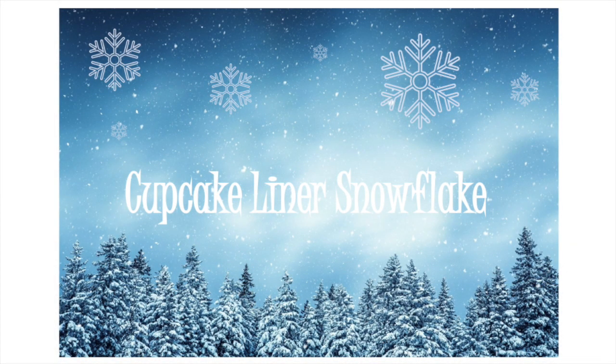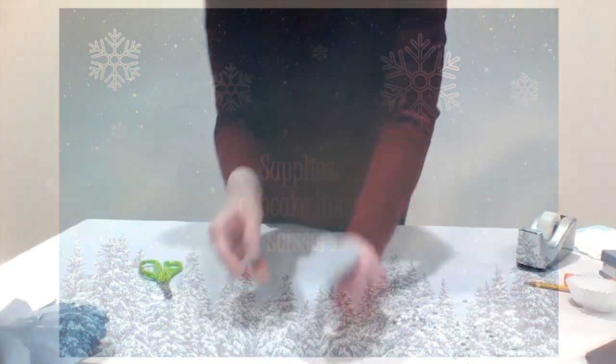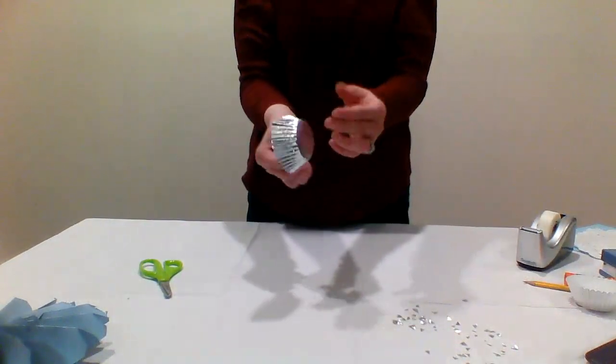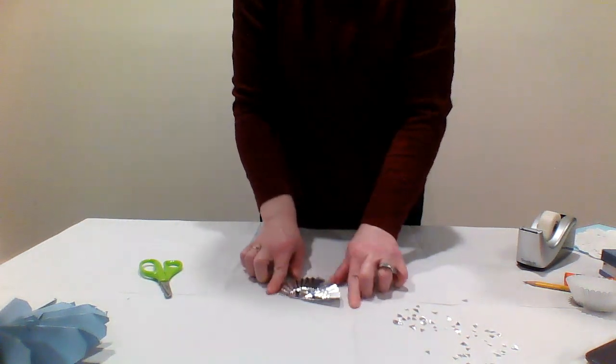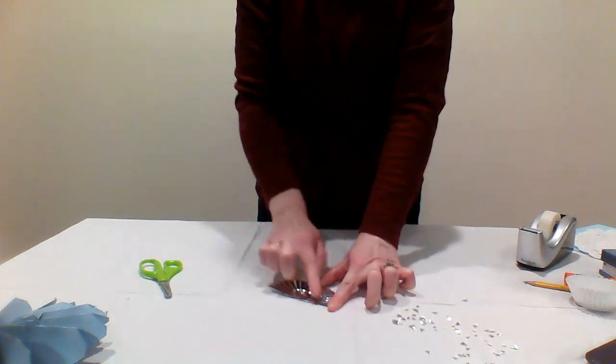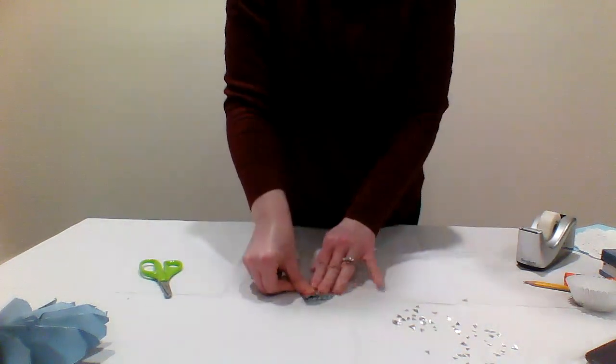Today's second craft is a cupcake liner snowflake. The supplies for this craft are a cupcake liner and scissors. Gently flatten the cupcake liner into a circle. Fold it in half once. Fold it in half to create a triangular shape.